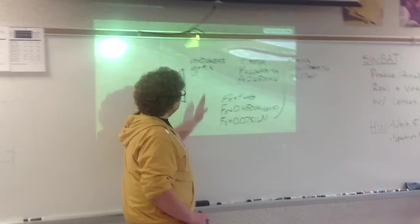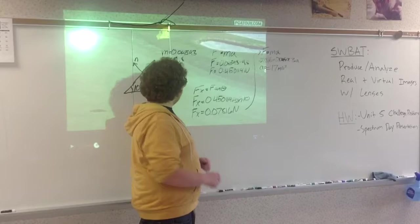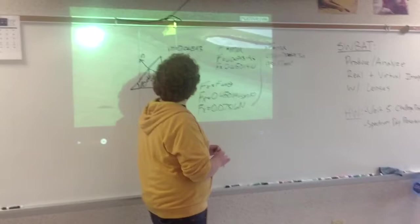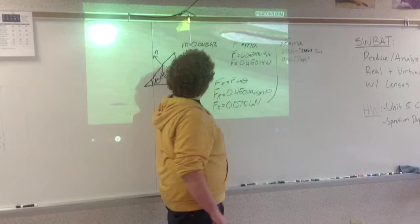So from there, we go to force equals mass times acceleration. Of course, we know the mass, 0.04593, and then we multiply that by the force of gravity, 9.8. So for the force of gravity upon the ball, we get 0.450114 newtons.